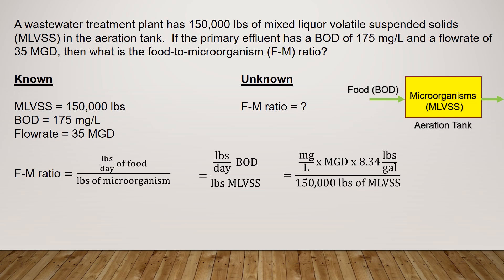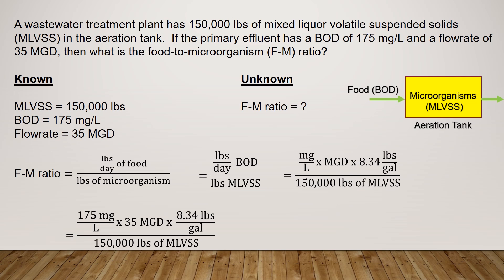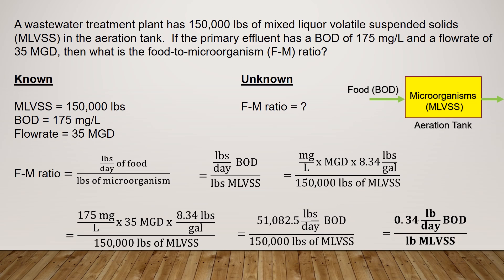It's a matter of just plugging these numbers in. We have 175 mg per liter multiplied by the flow rate 35 MGD, multiplied by the conversion factor 8.34 pounds per gallon, divided by 150,000 pounds of MLVSS on the bottom. Calculating the pounds per day of BOD gives us 51,082.5 pounds per day. This gives us the FM ratio as 0.34 pounds per day of BOD per pound of MLVSS.